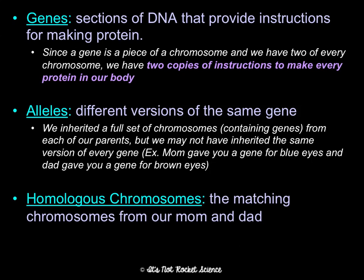Homologous chromosomes are the matching or complementary chromosomes from mom and dad. Chromosome number three from mom has the same genes in the same locations as chromosome three from dad, but the alleles — the actual instructions for those genes — may differ.